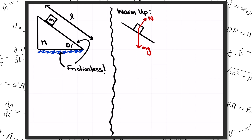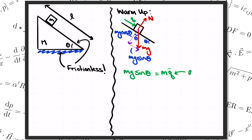Now we add up those forces and write F equals ma. That's a vector equation, but the block is only moving in one direction — along the length of the ramp. So let's define a coordinate q that measures the position of the block with respect to the top of the ramp. The only force pointing in the q direction is the component of gravity parallel to the ramp, which is mg times the sine of theta. Then the F equals ma equation for q is: mg sine theta equals m times q double dot, where q double dot is the acceleration of q — the second derivative of q with respect to time. This gives a simple equation: the block slides down with constant acceleration, q double dot equals g times sine of theta.